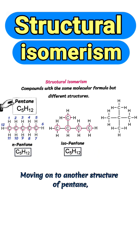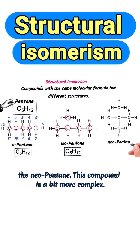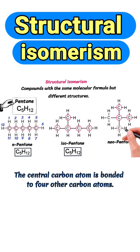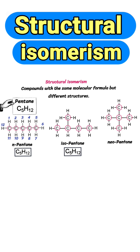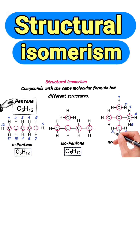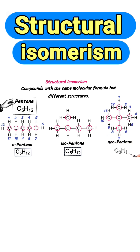Moving on to another structure of pentane — neopentane. This compound is a bit more complex. The central carbon atom is bonded to 4 other carbon atoms. There are a total of 5 carbons and 12 hydrogens in the structure. The molecular formula is C5H12.